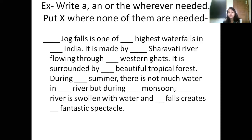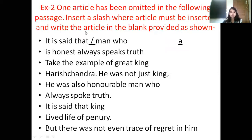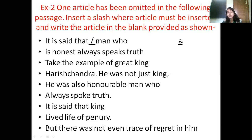In this exercise you have to write articles wherever we can write them, and wherever articles are omitted you have to put a cross. You can pause the video, write the questions, and then write the answers with your pencil — we will discuss in the next class. This is only half of the paragraph; the other half is continued. For the next question, I have intentionally omitted articles at some places and you have to identify those places. Put a slash where articles must be written and write the article in the blank.